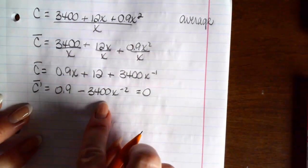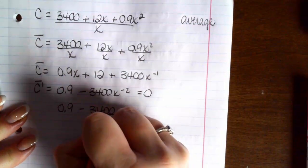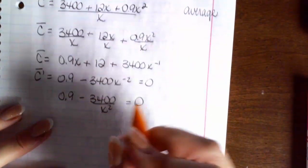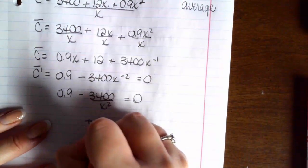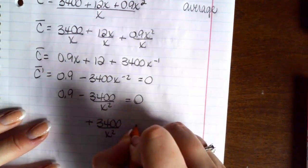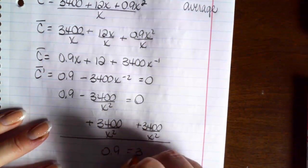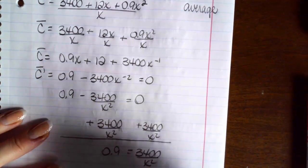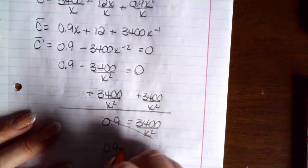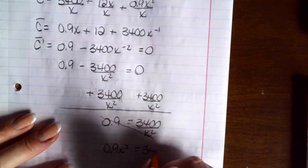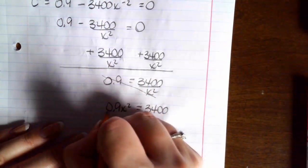Okay, so I'm going to rewrite this just so it's a little bit easier for my brain to handle. So I've got 0.9 minus 3,400 over x squared is 0. So we're going to add this term over to the other side. So we have 0.9 equals 3,400 over x squared and now I can cross multiply. So I'm going to cross multiply 0.9x squared is 3,400. Divide both sides by 0.9.